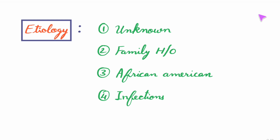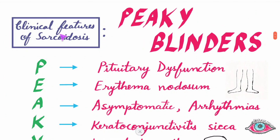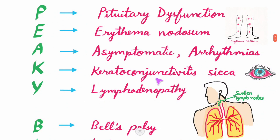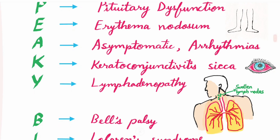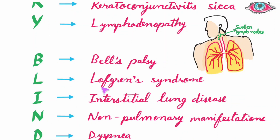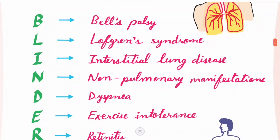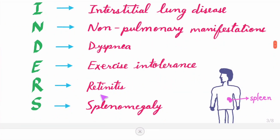Infections also contribute to sarcoidosis. Here is the mnemonic for clinical features of sarcoidosis — that is 'PEAKY BLINDERS': P for pituitary dysfunction, E for erythema nodosum, A for asymptomatic or arrhythmias, K for keratoconjunctivitis sicca, Y for lymphadenopathy, B for Bell's palsy, L for Löfgren's syndrome, interstitial lung disease, non-pulmonary manifestations, dyspnea, exercise intolerance, retinitis, and splenomegaly.